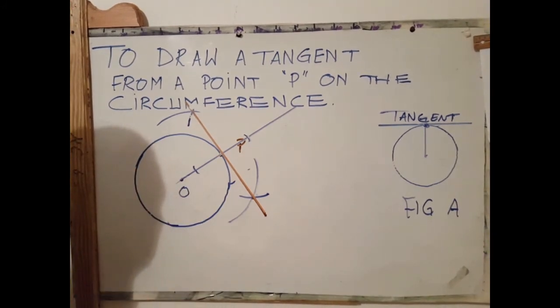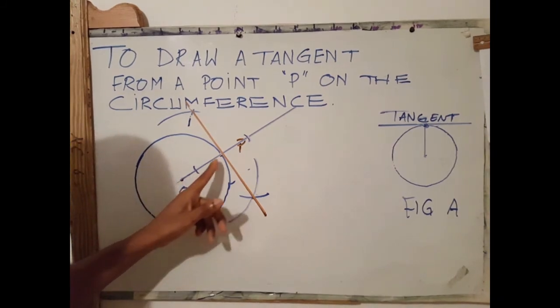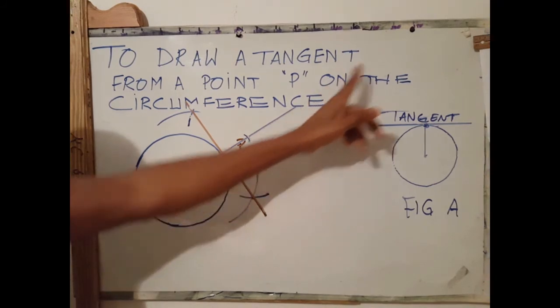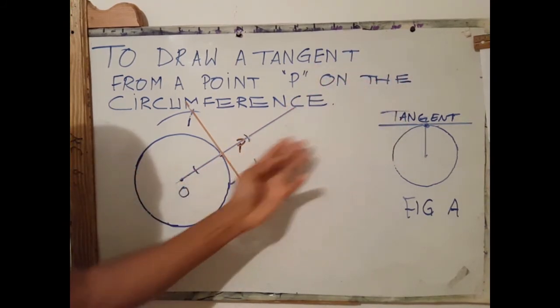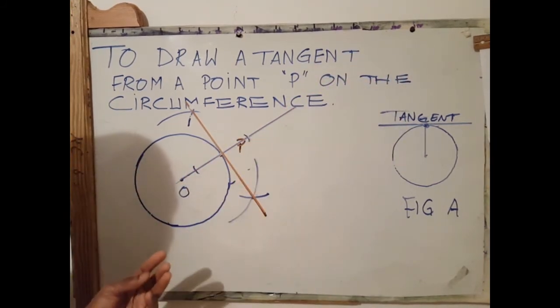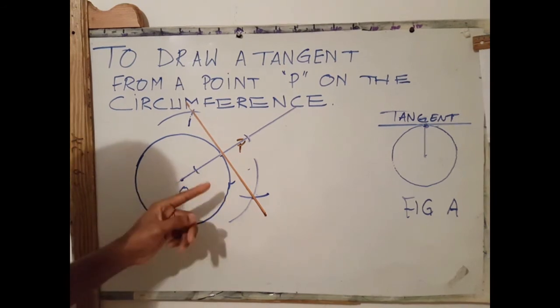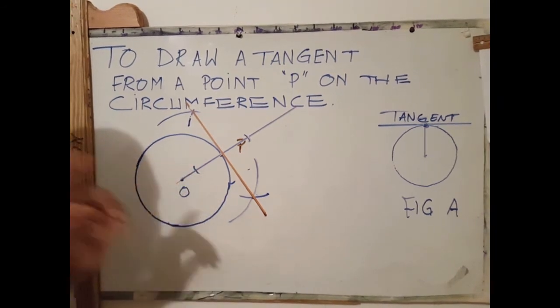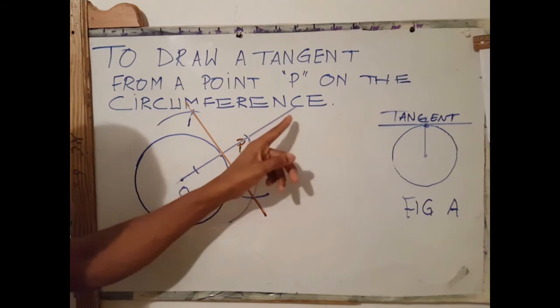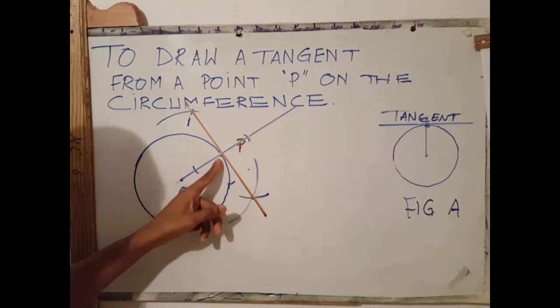Just to recap, the first step is to draw a line from the center through where you want the point to be formed, then extend that line outward. Second step is to construct a perpendicular line to the line that you've drawn at point P, which is here.